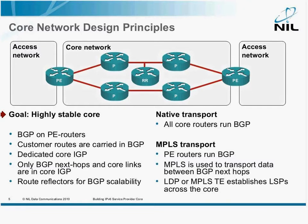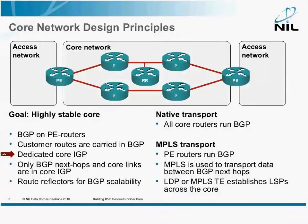Whatever is happening in the access network shouldn't affect the core. Which usually means that you have to split the customer routing from the core routing. What I usually recommend is to have customer routes in BGP, so that if the customer networks flap, you don't get IGP flaps. And to run a dedicated core IGP, which is never affected by issues in the access network.